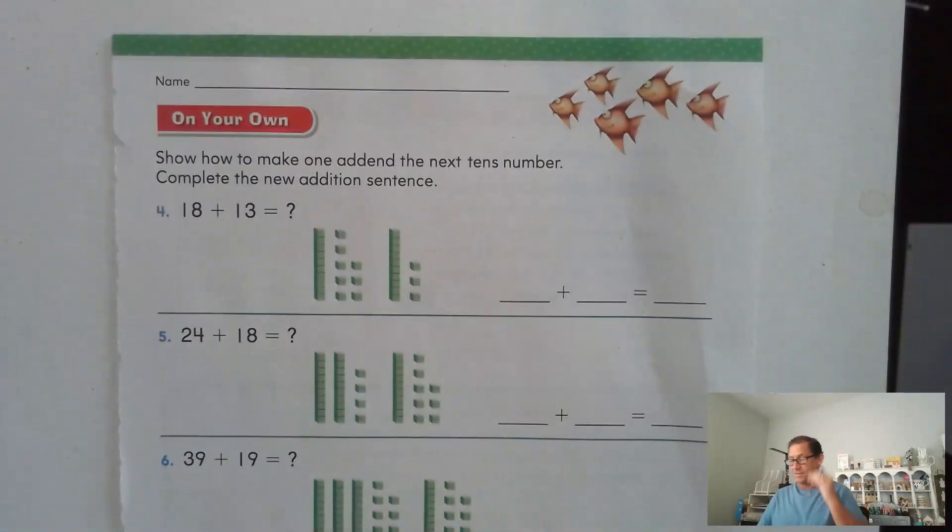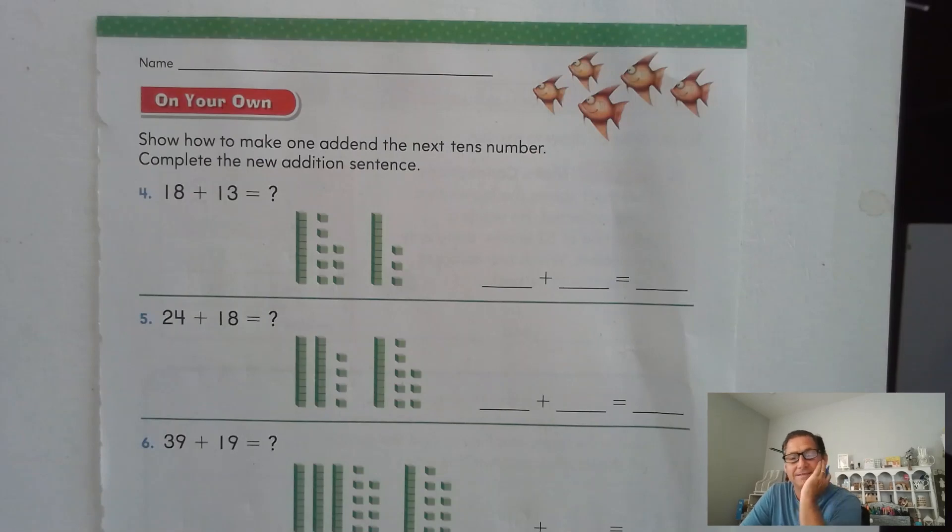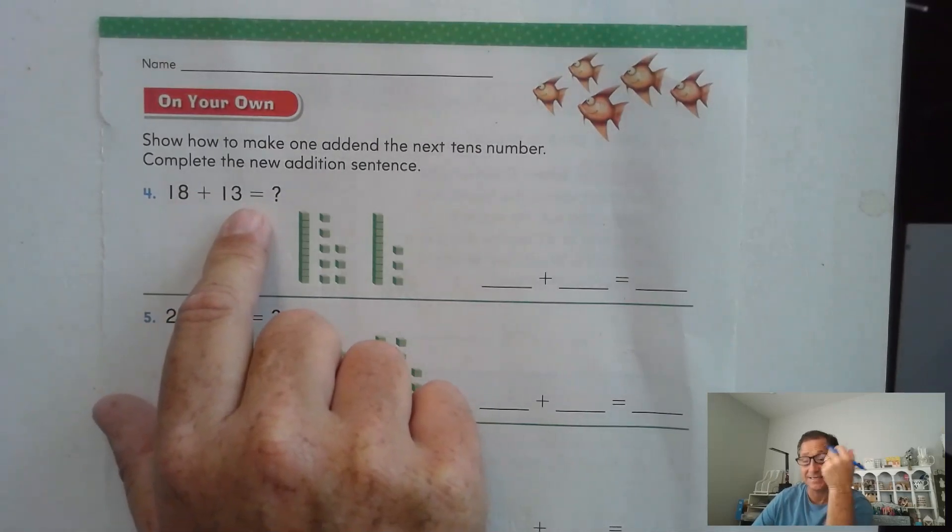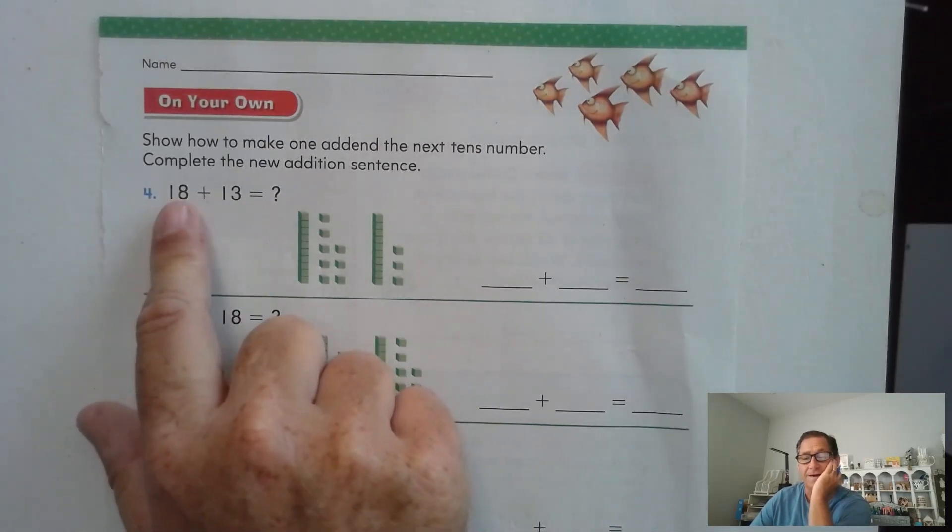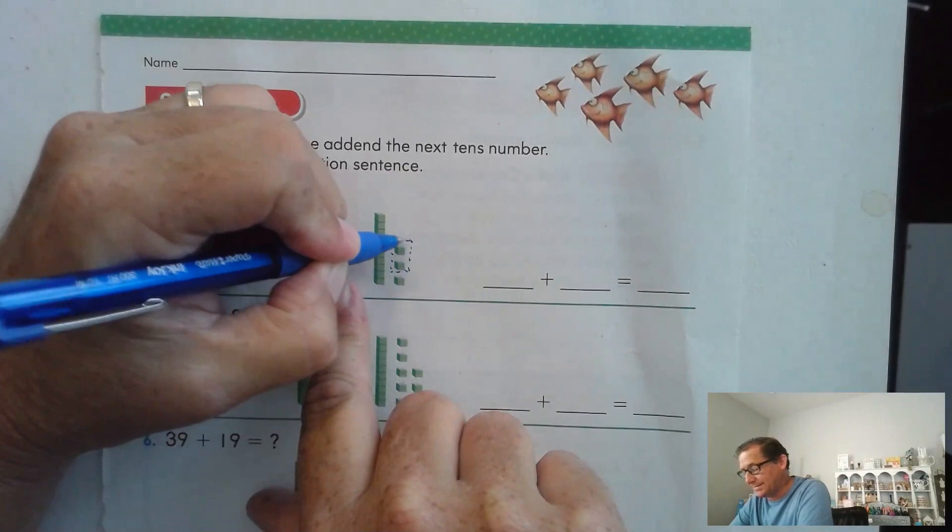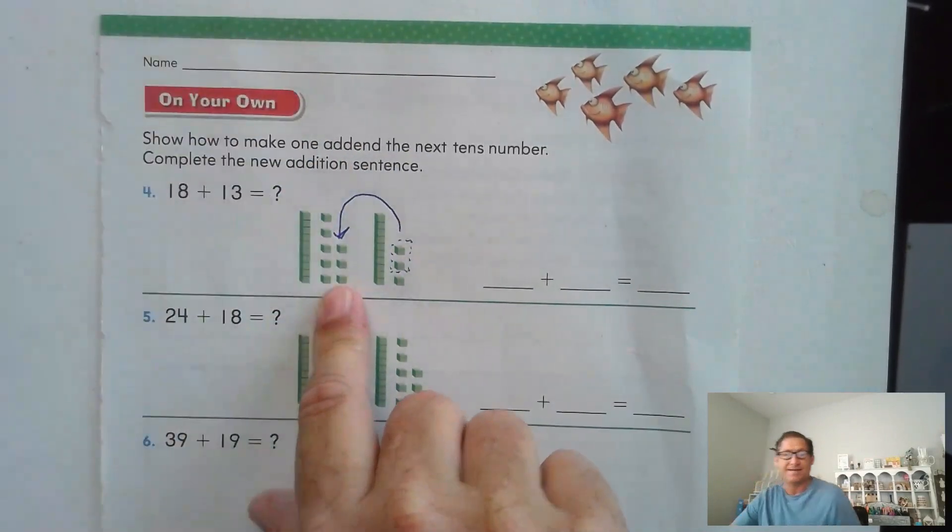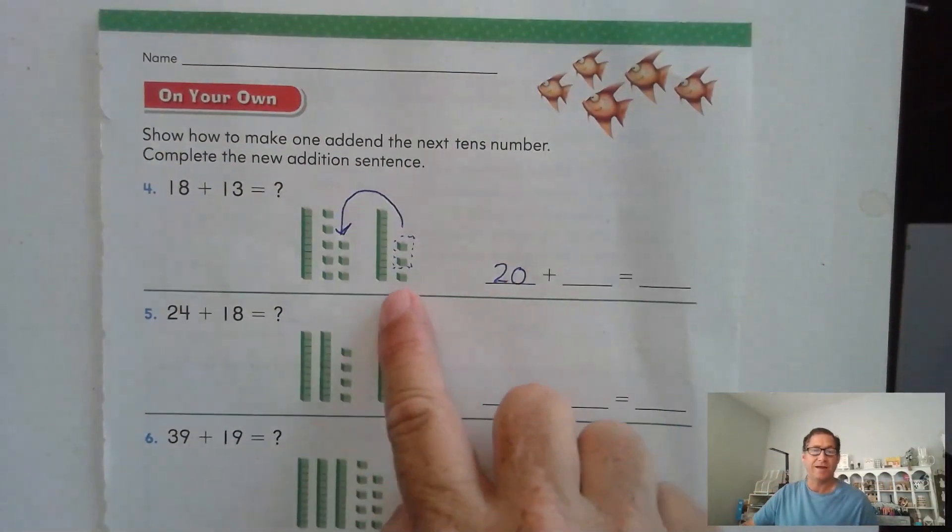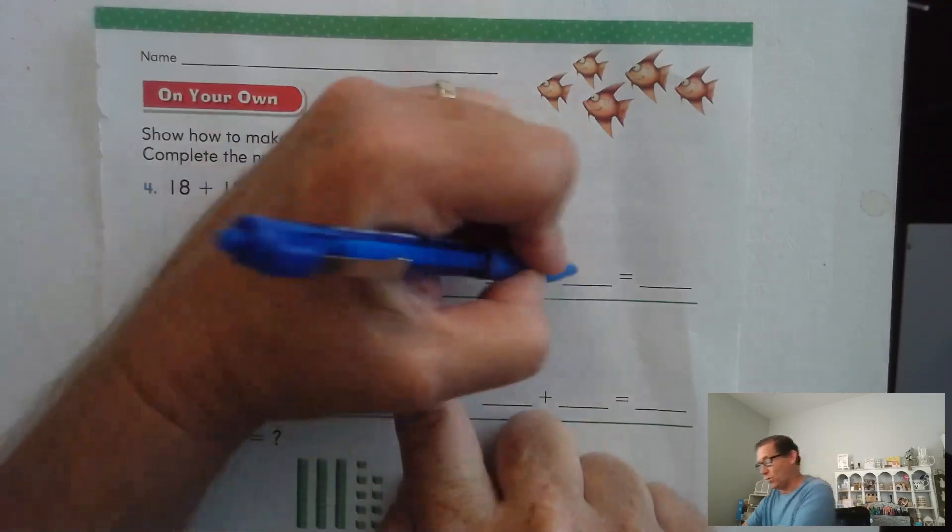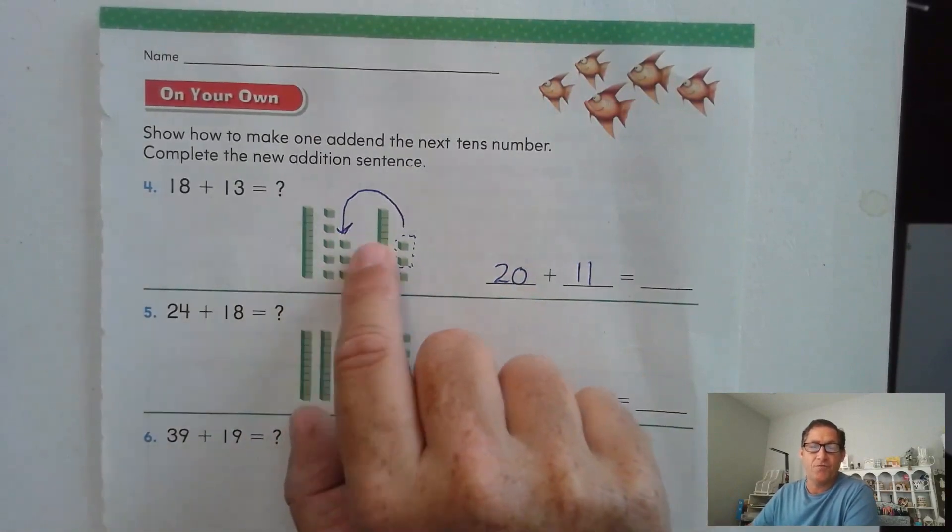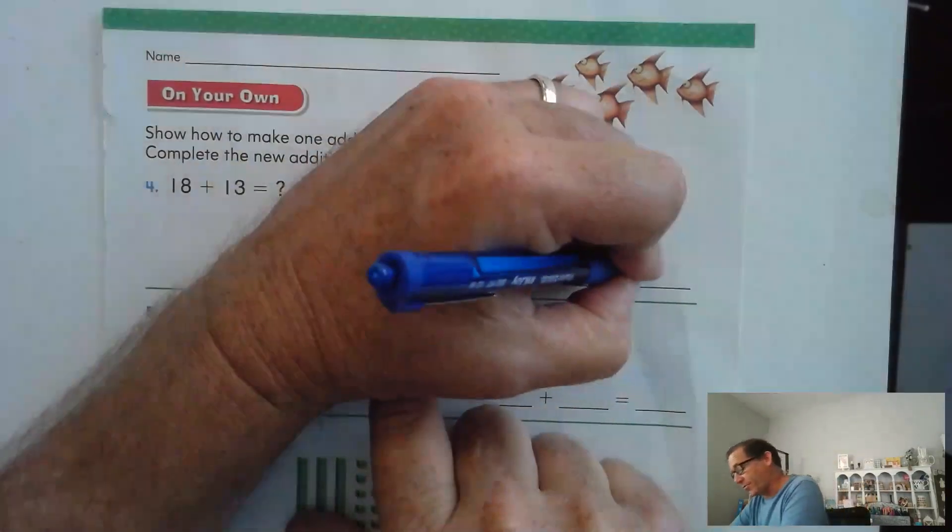Let's look at page 179. So we're going to keep going, practicing making one of the addends the next 10. 18 and 13. I don't care which one you make into the 10, the next 10. I'm going to choose the larger addend. So I have 18. I need to take two ones to make the next 10. 18 plus two makes 20. How much do we have left? We have 10 and one one, which is 11. How many tens do we have? We have one, two, three, and one one. So we have 31.